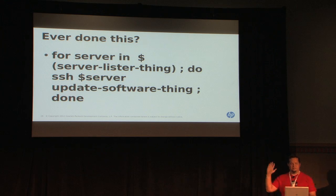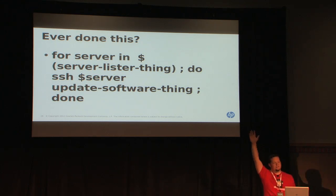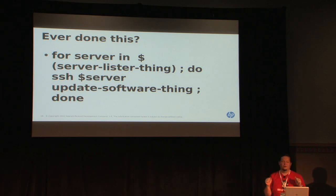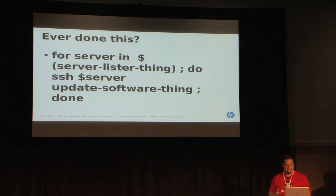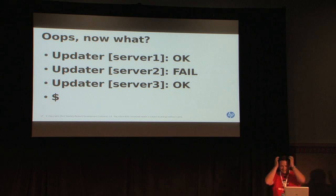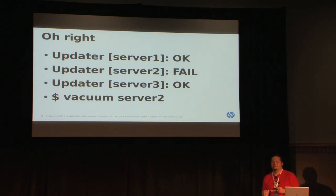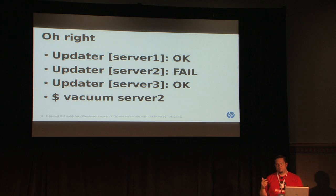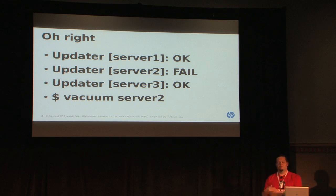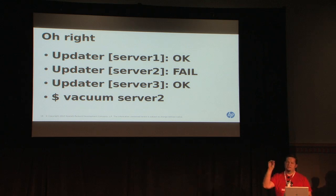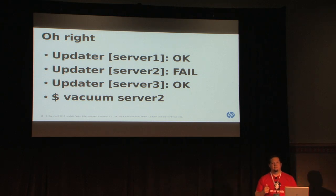Before we all had Puppet and Chef, did anybody SSH in a for loop? The first time you figured this out, you went, oh my gosh, I have power. But failure handling is still manual. You're still doing things on individual servers, introducing entropy, and at scale losing time — so you can't launch your rocket.